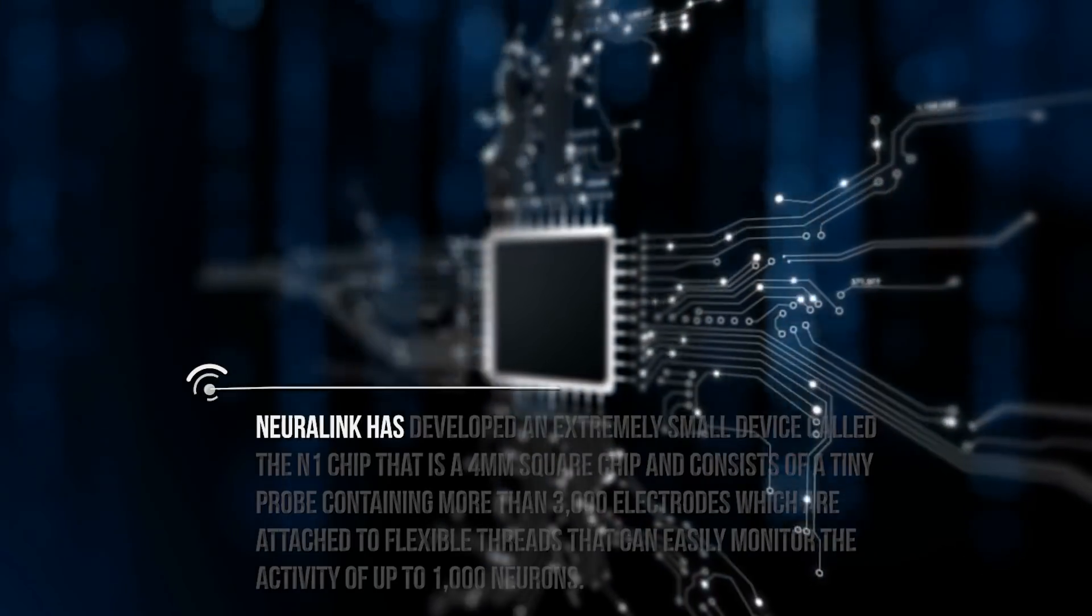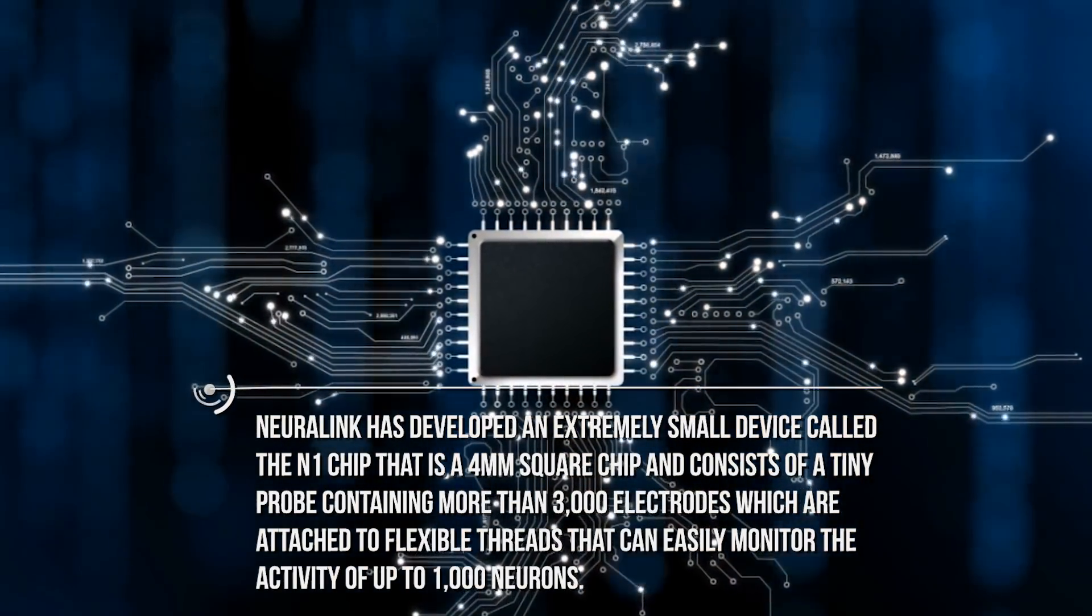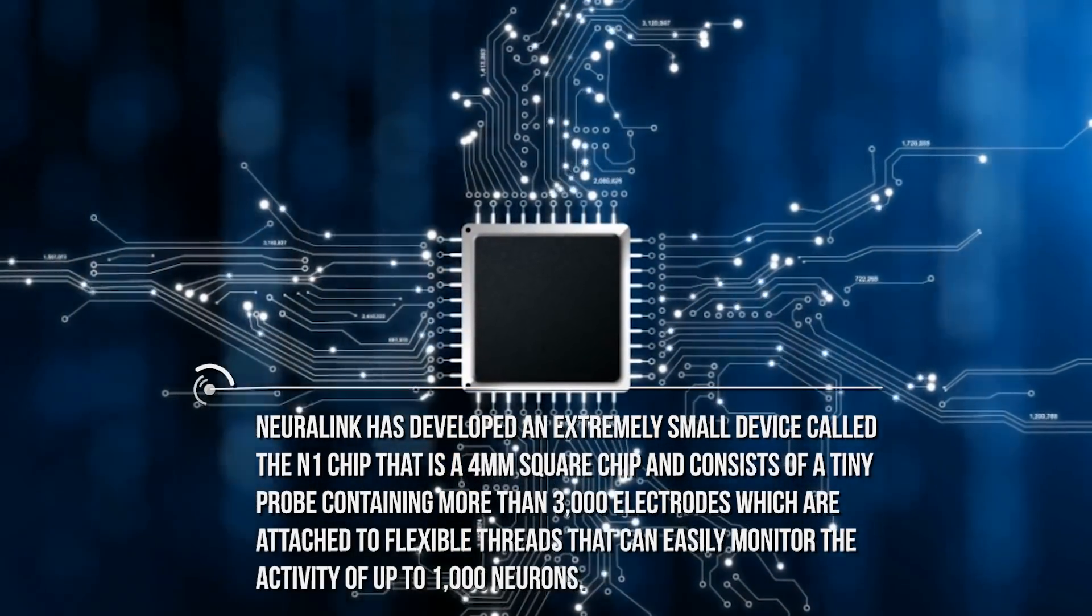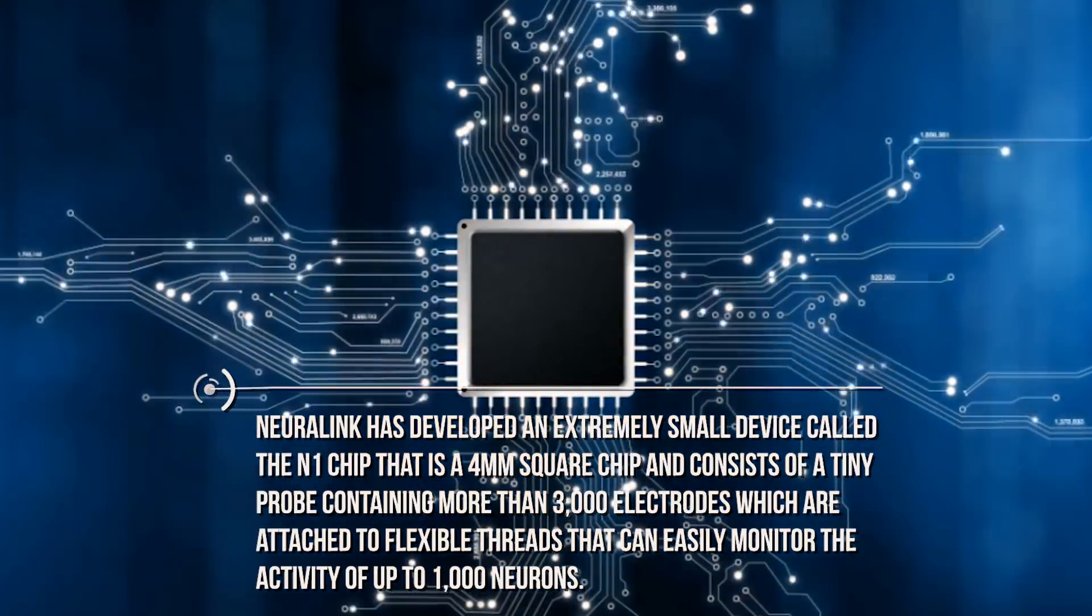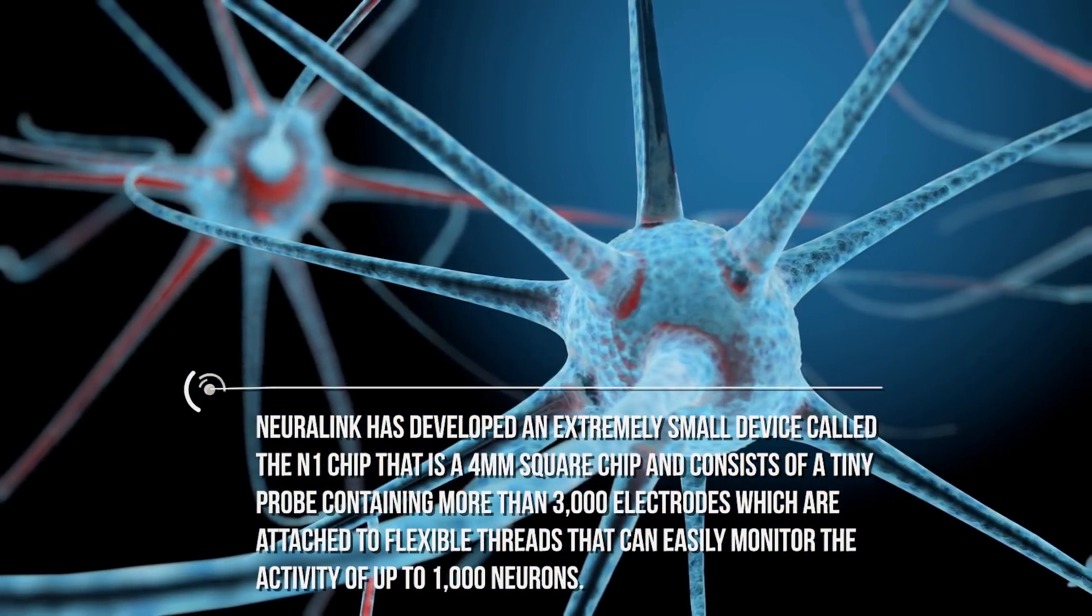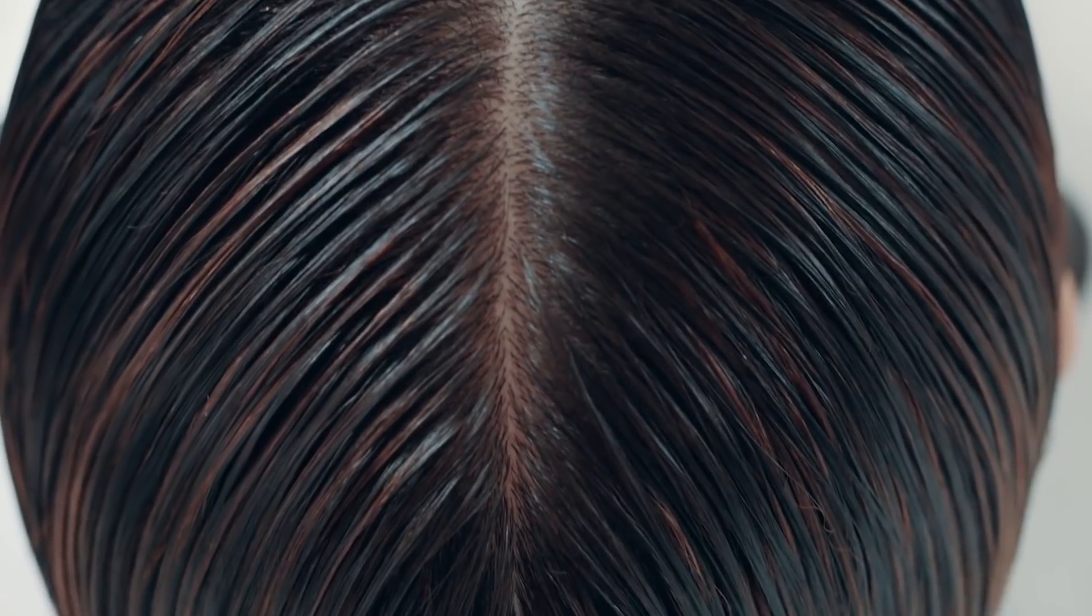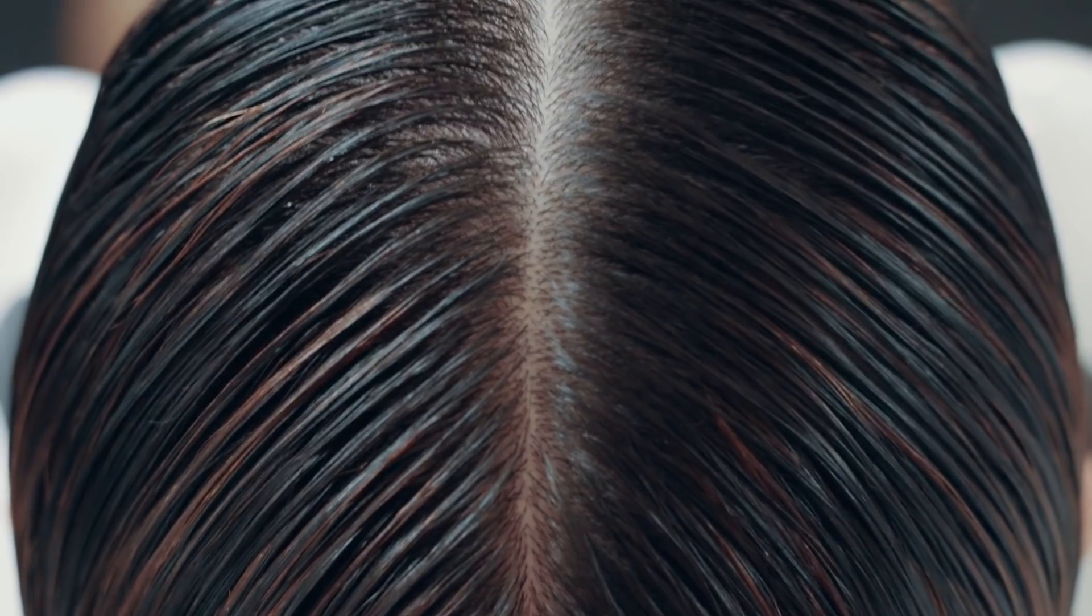Neuralink has developed an extremely small device called the N1 chip, a 4-millimeter square chip consisting of a tiny probe containing more than 3000 electrodes attached to flexible threads that can monitor the activity of up to 1000 neurons. Each thread is thinner than a human hair.